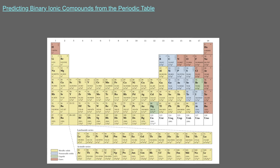Let's move on to the nonmetals. Elements in group 17 of the periodic table, also called halogens, always make anions with a negative 1 charge. Elements in group 16 usually make anions with a negative 2 charge, but that's only true of the nonmetals at the top of the group.